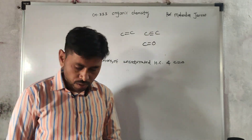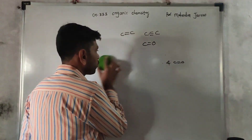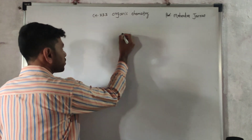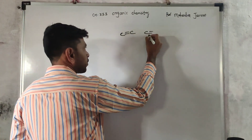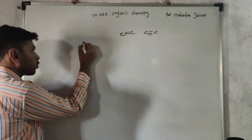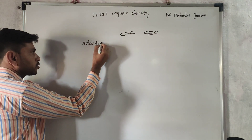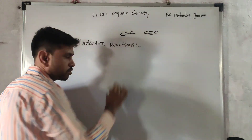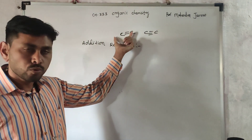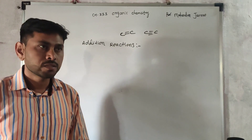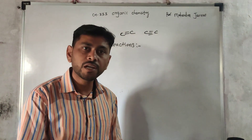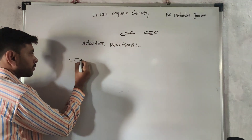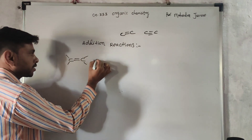Unsaturated hydrocarbons undergo addition reactions, because they are unsaturated — for example, C triple bond C. So these unsaturated systems undergo addition reactions. An addition reaction is when two molecules combine to form a single molecule, or two molecules combine to yield a single product. For example, any carbon-carbon double bonded system reacting with a reagent — consider it as Y-Z — these two molecules combine to form a single product.